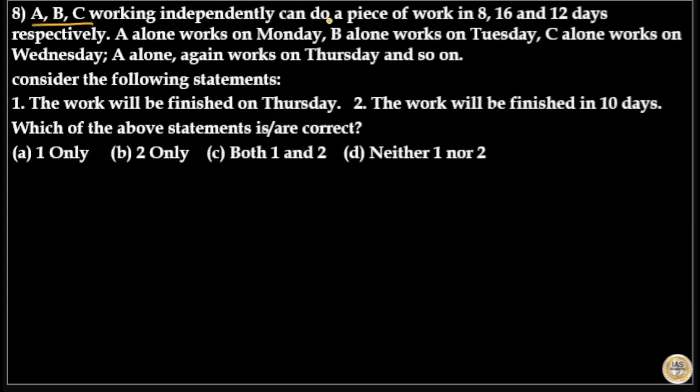A, B, C working independently can do a piece of work in 8, 16, and 12 days respectively. A alone works on Monday, B alone works on Tuesday, C alone works on Wednesday, A alone again works on Thursday and so on.